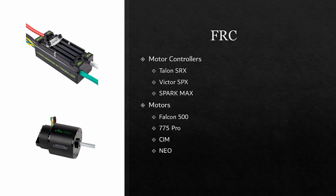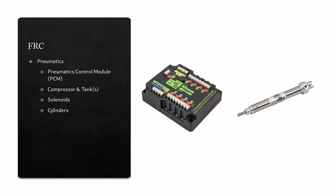Neo motors are also great motors, but due to the fact that they require the SparkMax motor controllers to function and that they cannot be integrated into the CAN loop on the robot, it makes it much harder for programmers. We don't use them. The motor shown here is the Falcon 500.